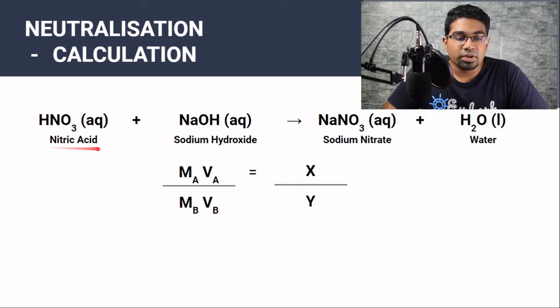So the moles of acid, the ratio of acid to base here is 1 to 1. Whenever there is no number in front of the acid or in front of the base, the number is actually 1. So X and Y are 1, 1 to 1.